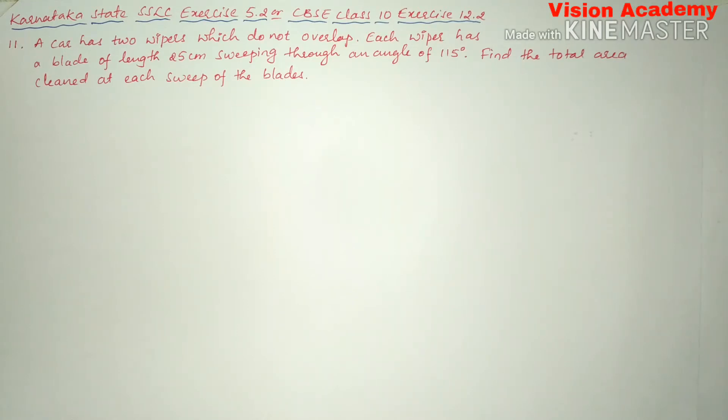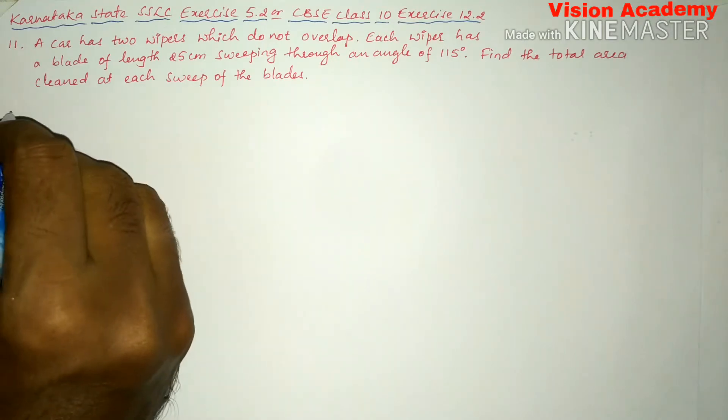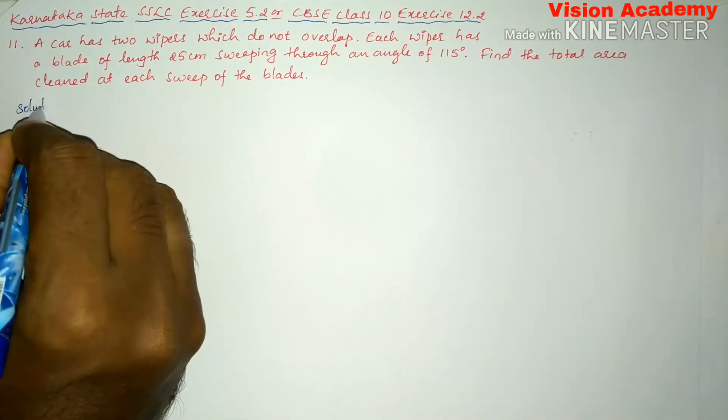A car has two wipers which do not overlap. Each wiper has a blade of length 25 cm sweeping through an angle of 115 degrees. Find the total area cleaned at each sweep of the blades. Now let us find the solution for the given problem.